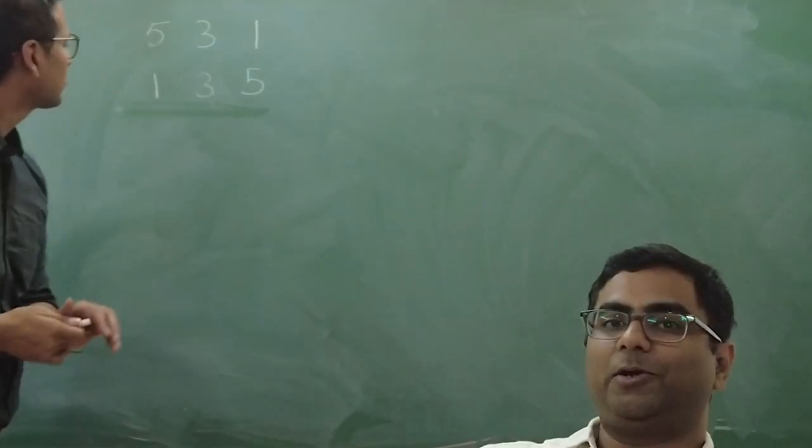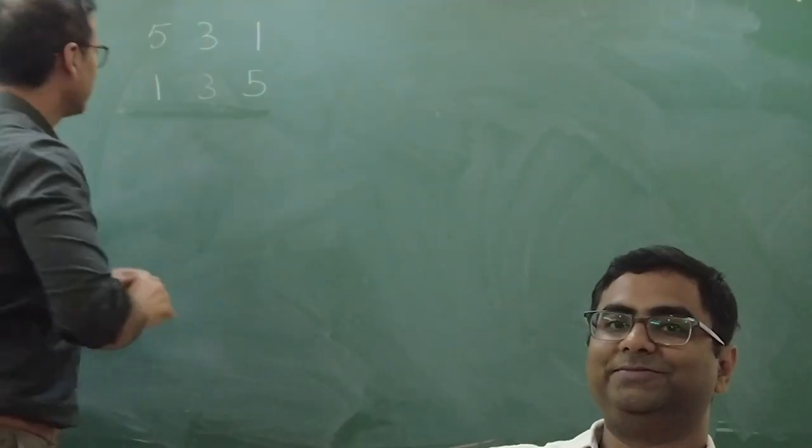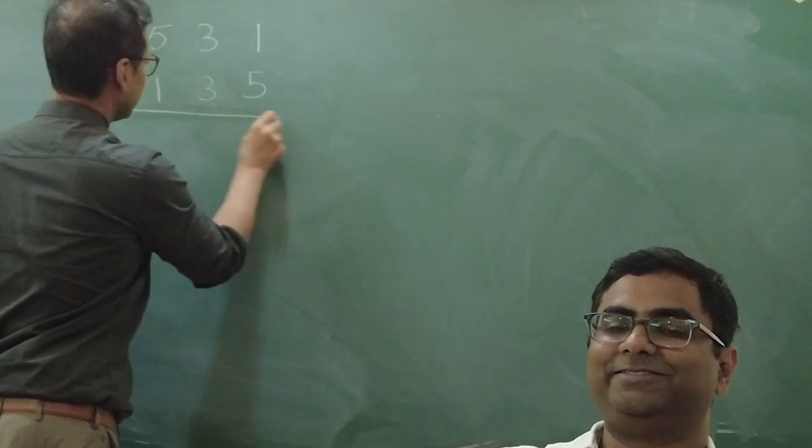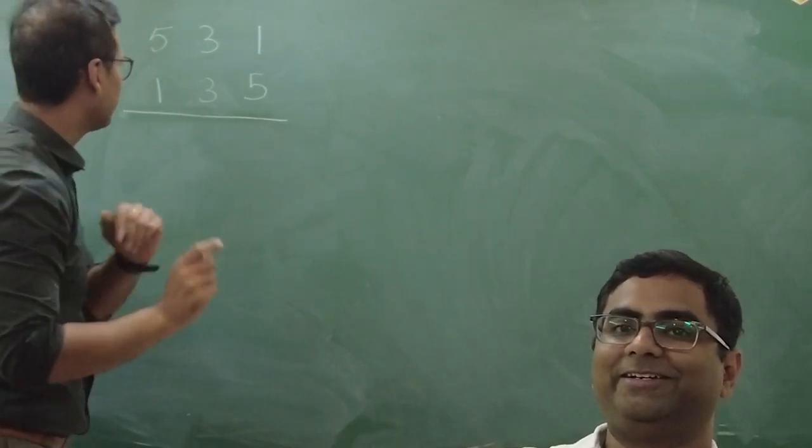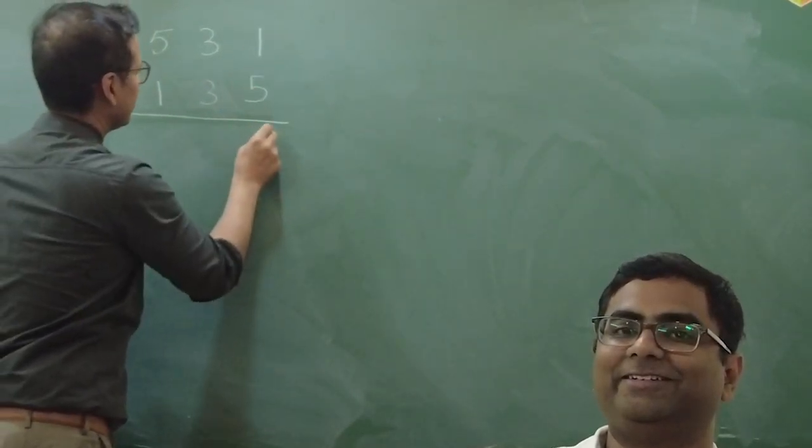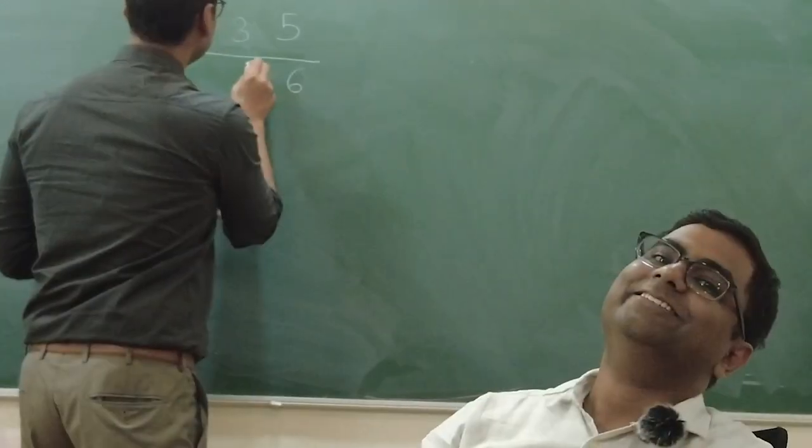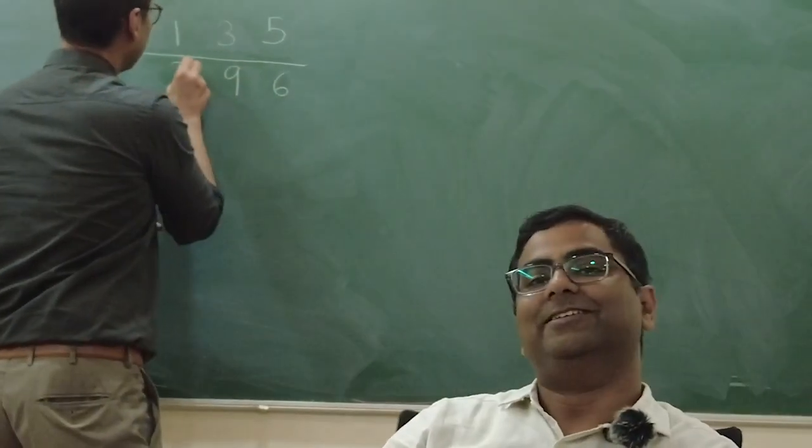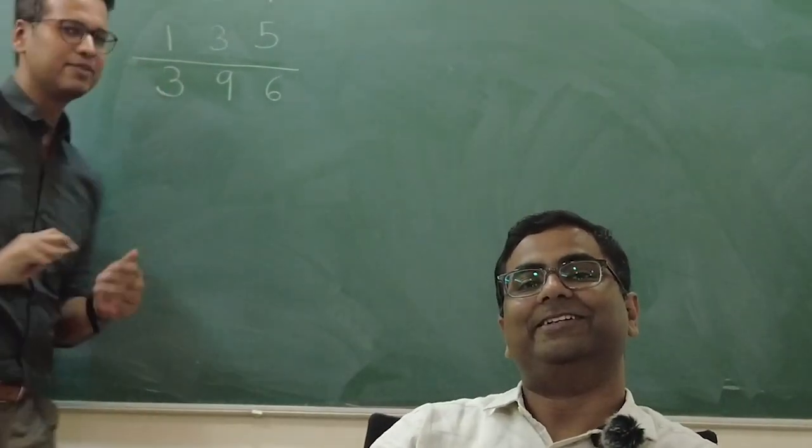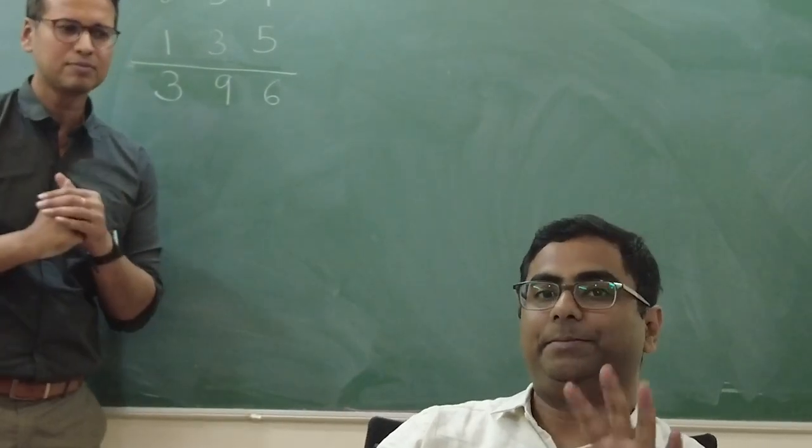Okay, now step number two is, reverse the digits and get another three digit number. Okay. Yeah, I got it. You subtract the smaller one from the larger one. Okay. Are you done with that? Let me do that.